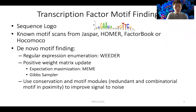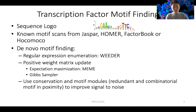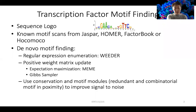We talk about sequence logos. In species such as human and mouse, there are databases of different transcription factor motifs such as JASPAR and HOMER FactorBook. Probably the most updated complete collection is the database called HocoMoco. If you don't have the motif information, you have to do de novo motif finding.